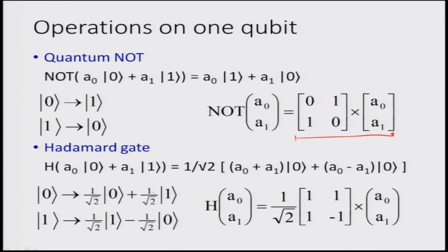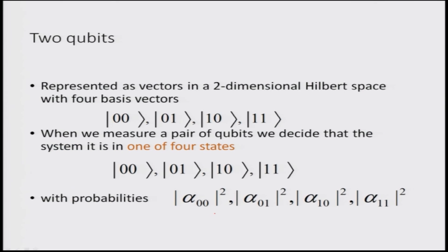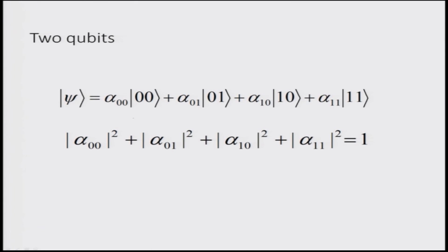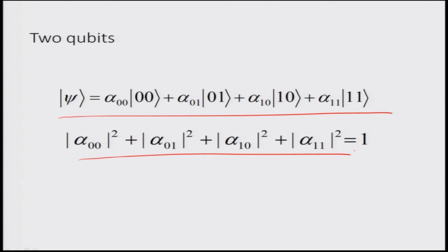Similarly, a Hadamard gate makes an equal superposition of both states, written in terms of a square matrix representing the Hadamard gate operation. When we go to two qubits, we can represent them as vectors in two-dimensional Hilbert space with four basis states as discussed before. When we measure the pair of qubits, we determine that the system is in one of the four states, each given with respect to certain probabilities. The two qubits will again have their different probabilities, representable in a form where the sum of the squares of the coefficients gives a total probability of 1.